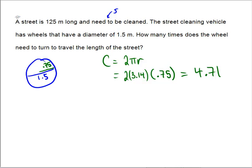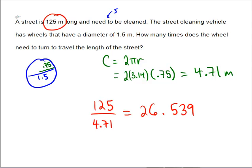So, what this indicates is that every time the wheel turns, it travels 4.71 meters. So, if you need to travel a street that is 125 meters long, we really need to figure out how many times does 4.71 go into 125. So, 125 divided by 4.71 would indicate that we would need to travel 26.539 many rotations. 26.539 rotations.